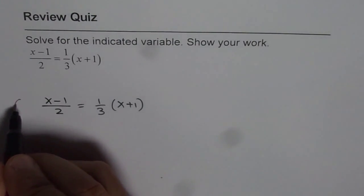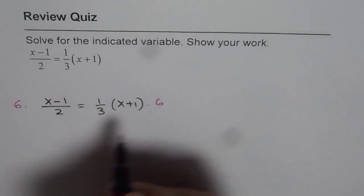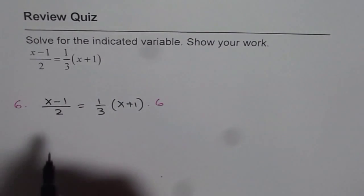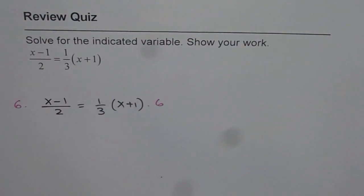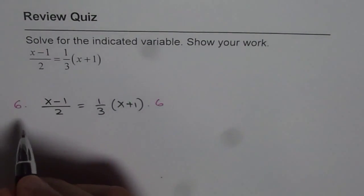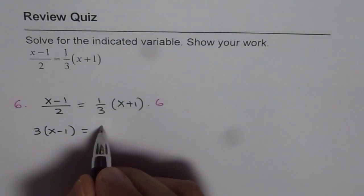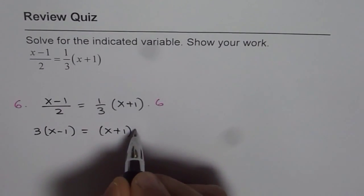We will solve by multiplying both sides by the lowest common denominator which is 6. So when I multiply by 6 what do I get? I get 3 times x minus 1 equals to x plus 1 times 2.